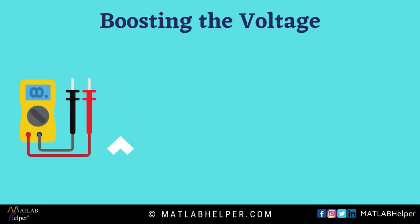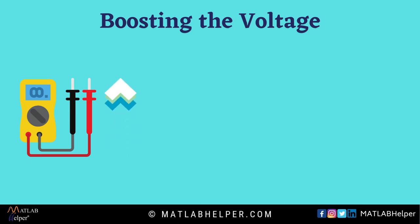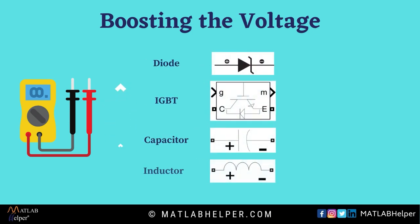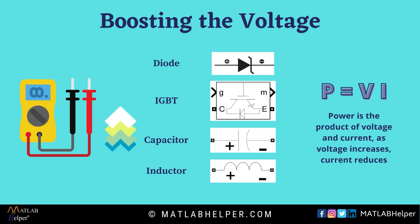The first thing we need to perform is to increase the voltage coming from the output of a photovoltaic cell. Since it is a DC output, we use a boost converter to step up the voltage. A boost converter consists of a diode, an IGBT switch, a capacitor and an inductor. It works on the principle of conservation of power — as the voltage increases, the current reduces.